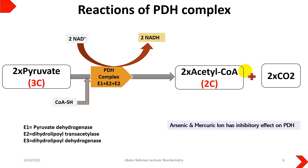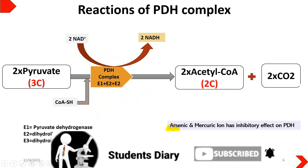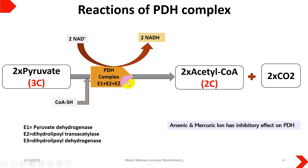A few important things to remember: the pyruvate dehydrogenase complex enzymes are inhibited by arsenic and mercuric ions, which can stop the process of oxidative energy production. Arsenic is a potent poison, and small doses are enough to cause death. Similarly, mercuric ions have a poisonous effect and can inhibit this enzyme if taken by the human body.